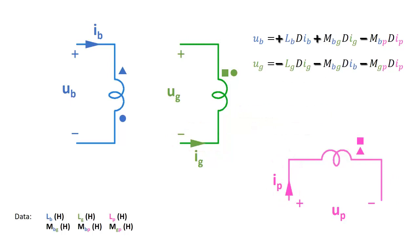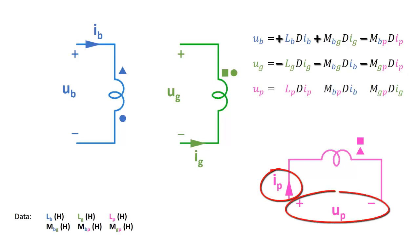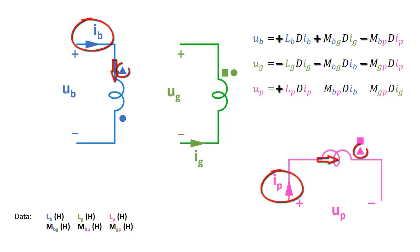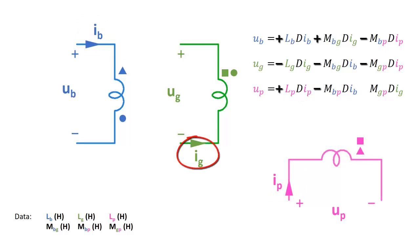Now please pause the video again and try to write the final equation corresponding to the pink coil. The solution is this one. The first term is positive because the pink current enters the plus sign of the pink voltage. The second term is negative because the blue current and the pink current do not enter by corresponding terminals. Finally, the third term is positive because the green current and the pink current enter through corresponding terminals.